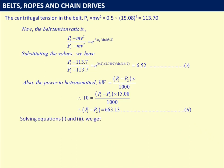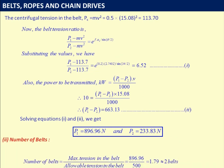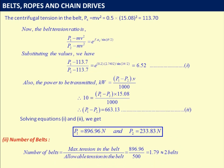Solving equations 1 and 2: tension on tight side P1 = 896.96 N, tension on slack side P2 = 233.83 N. Number of belts = P1 / allowable tension = 896.96 / 500 = 1.79. Rounding to the nearest whole number, the number of V-belts required = 2.